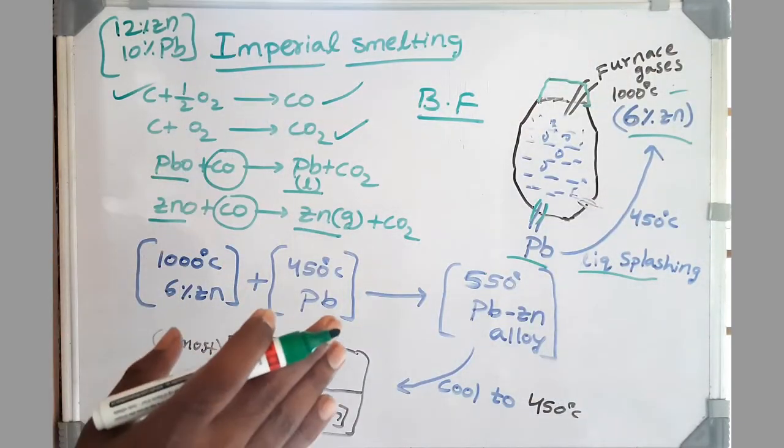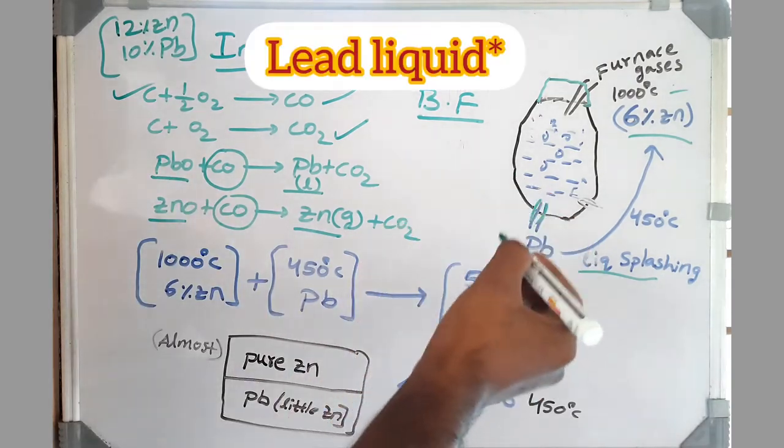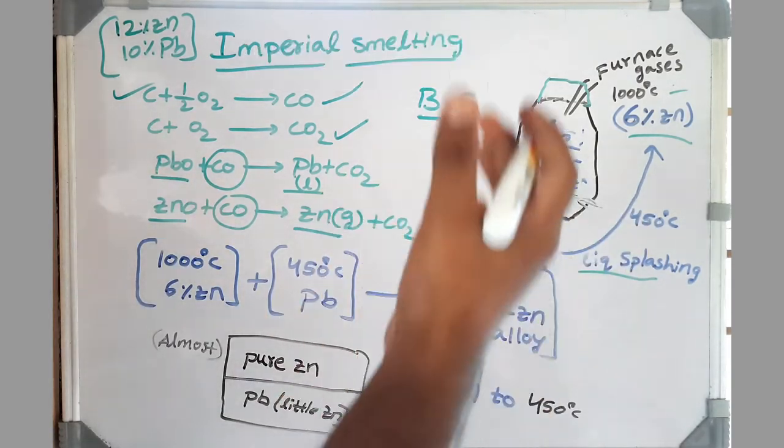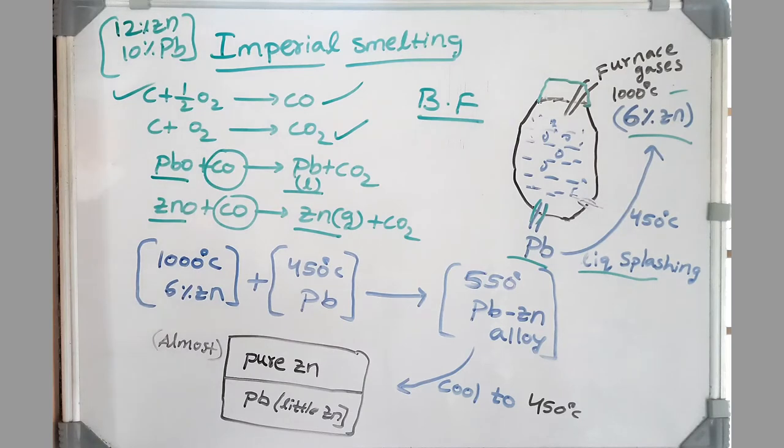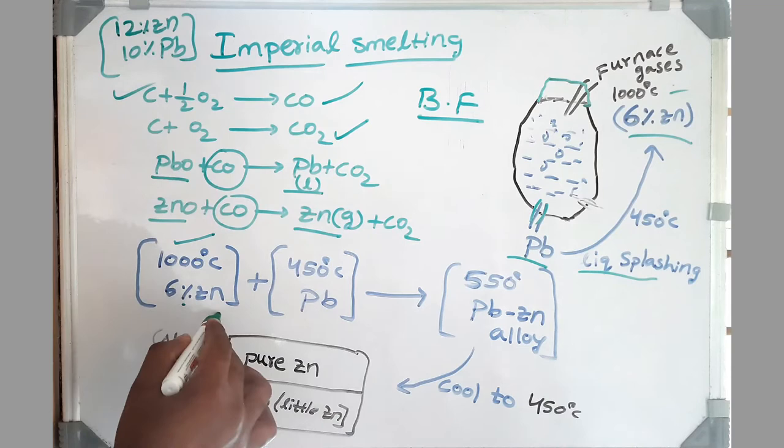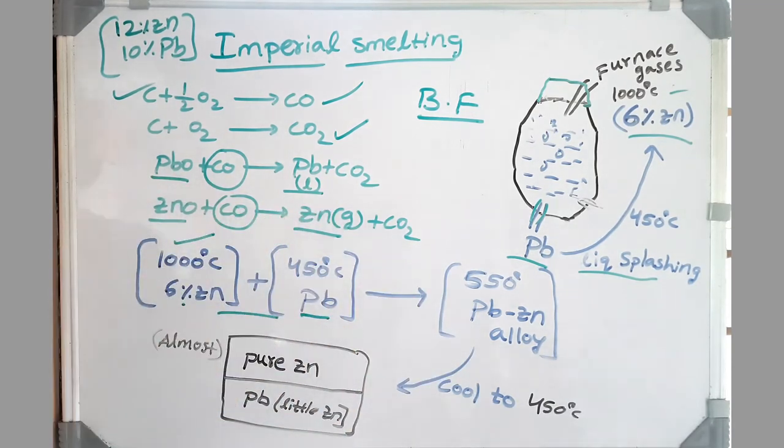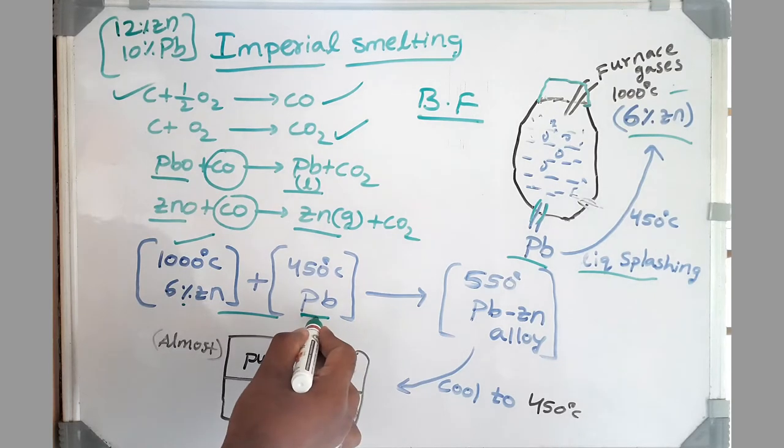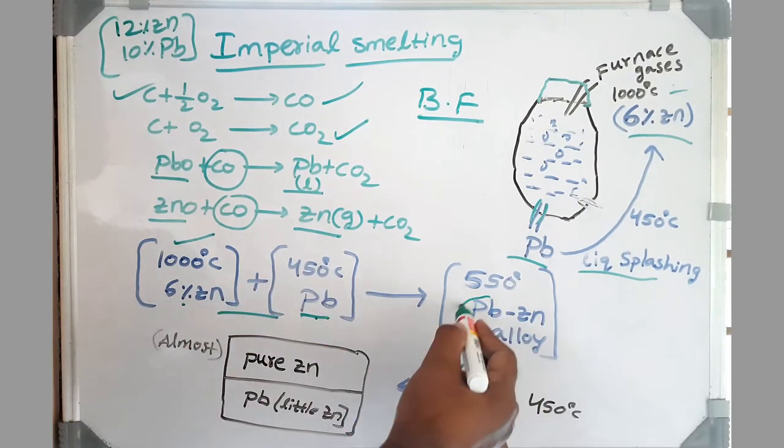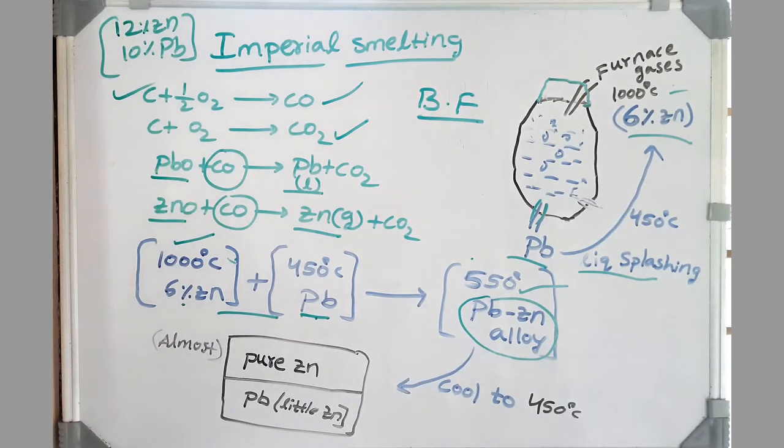Since zinc and lead form solid solution, this liquid lead absorbs all the zinc vapor which is present in the furnace gases. So this is the reaction, friends. Our furnace gases which is at thousand degrees centigrade reacts or we can say forms a solid solution - lead is taking zinc into the solution. Lead is at 450 degrees centigrade, it absorbs and forms lead-zinc alloy. Its temperature is also increased to 550 degrees centigrade.